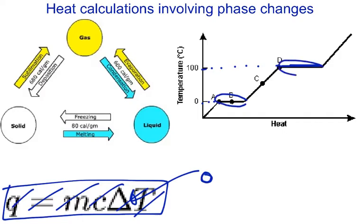That will not work for us, so we cannot use this Q equals MC delta T equation any time we're at a phase change. And as a recap, we know that vaporization takes place here when we have a liquid turning to a gas.